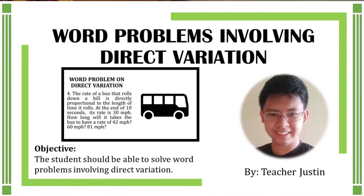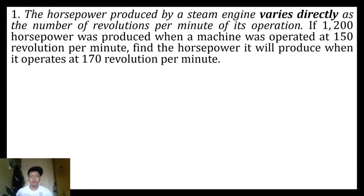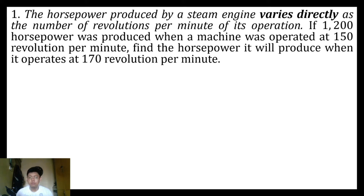Good day everyone, welcome to Math with Teacher Justin. On today's topic we're going to talk about solving word problems involving direct variations. In our word problem: the horsepower produced by a steam engine varies directly as the number of revolutions per minute of its operation. If 1200 horsepower was produced when a machine was operated at 150 revolutions per minute, find the horsepower it will produce when it operates at 170 revolutions per minute.